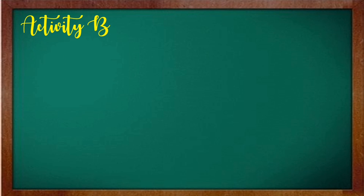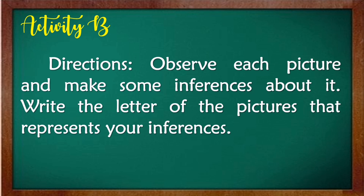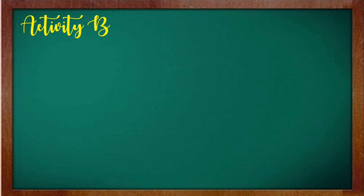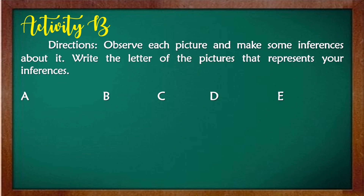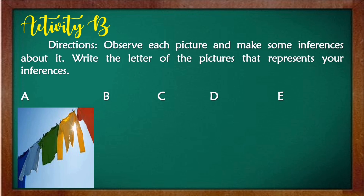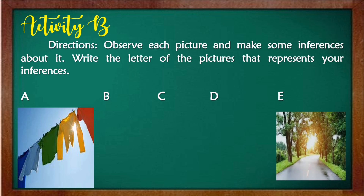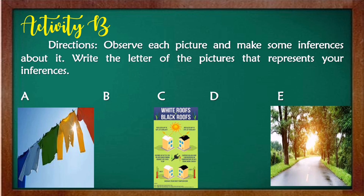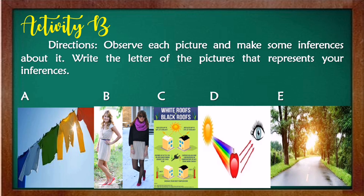We now have Activity B. Directions: Observe each picture and make some inferences about it. Write the letter of the picture that represents your inferences. The pictures are labeled A, B, C, D, and E.